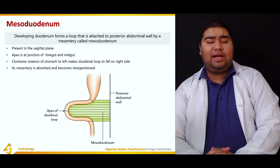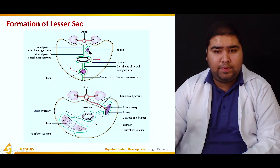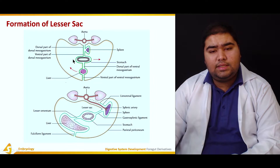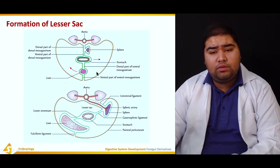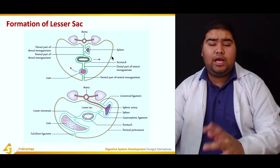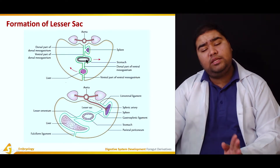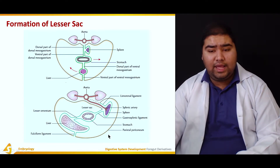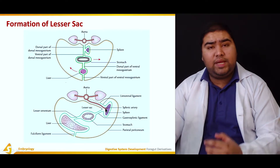Referring to the figure: this is the developing aorta, this is the developing spleen, this is the stomach, and this is the dorsal mesogastrium — its dorsal part and its ventral part. This is the developing liver, the ventral part of the ventral mesogastrium, and the dorsal part of the ventral mesogastrium. These arrows signify how adult positions are achieved. The liver is expanding rapidly and moves right, the stomach moves left, the spleen develops at an exponential rate and derives its blood supply from the aorta.